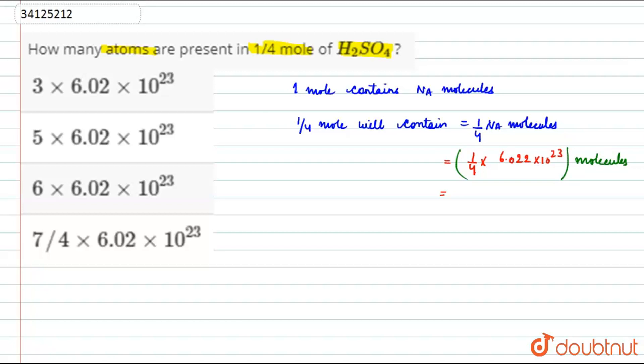Now, let's calculate the number of atoms. In 1 mole, the number of atoms in H2SO4 - how much is H2SO4? Look: 2 hydrogen, 1 sulfur and 4 oxygens. That is 7.